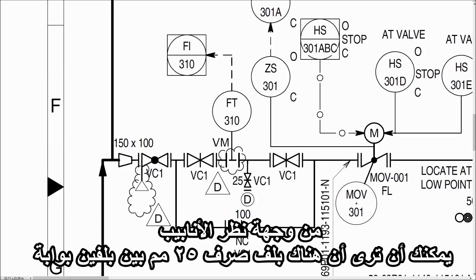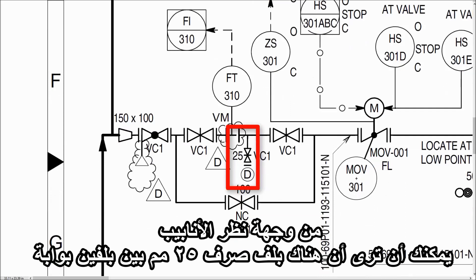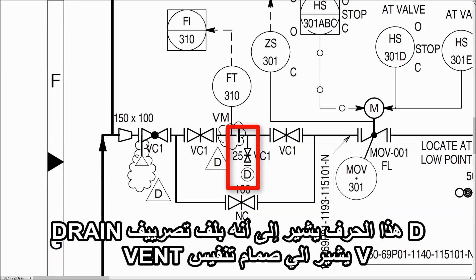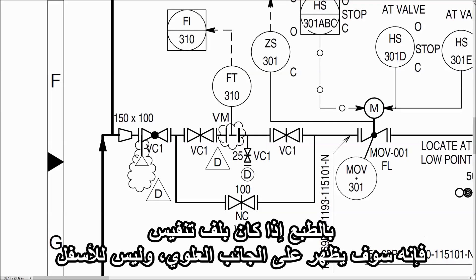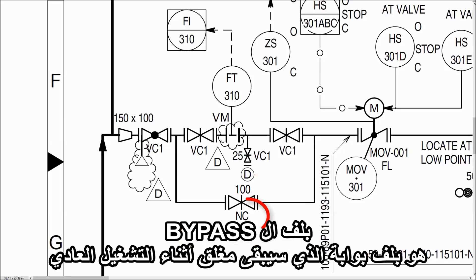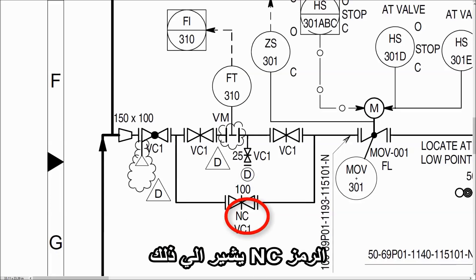From the piping point of view, you can see that there is a 25mm drain valve given in between the two gate valves. The letter D indicates that it is a drain valve, and if it is V then it is a vent valve. Of course, if it is a vent, it is shown on the top side, not on the bottom. The bypass valve is also a gate valve which will remain closed during normal operation. You can see the letter ANSI which indicates the same.